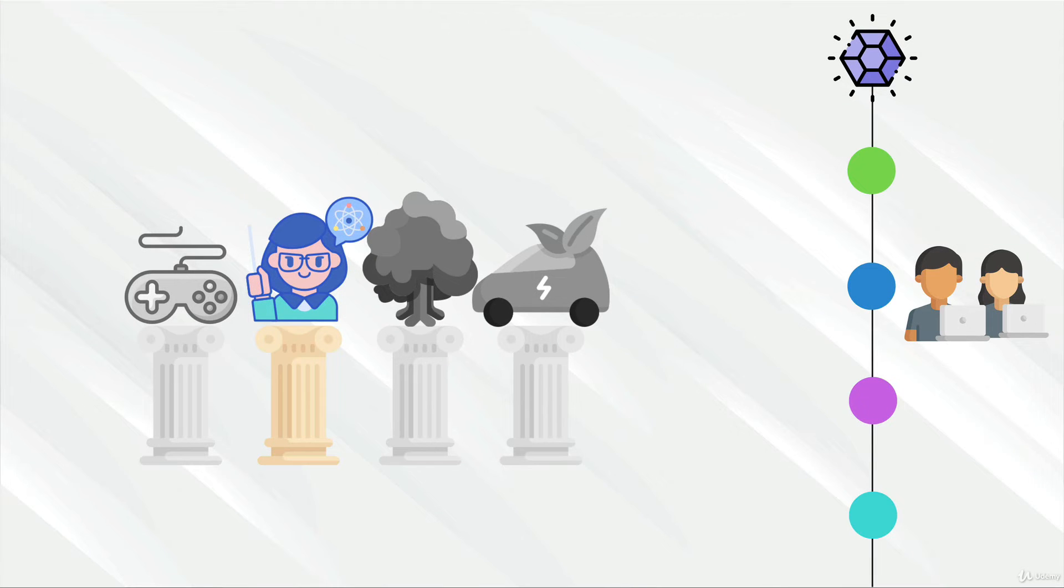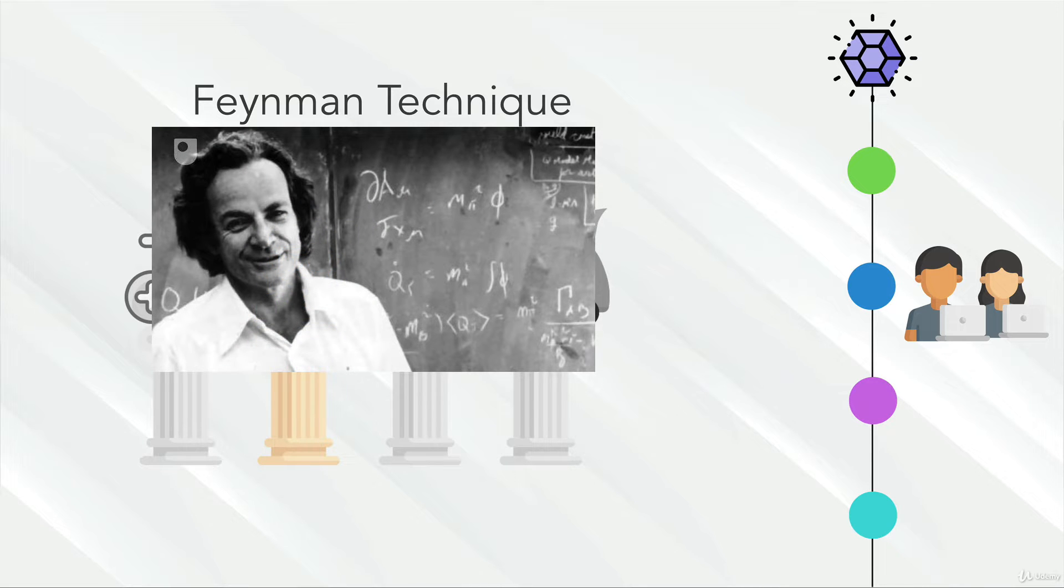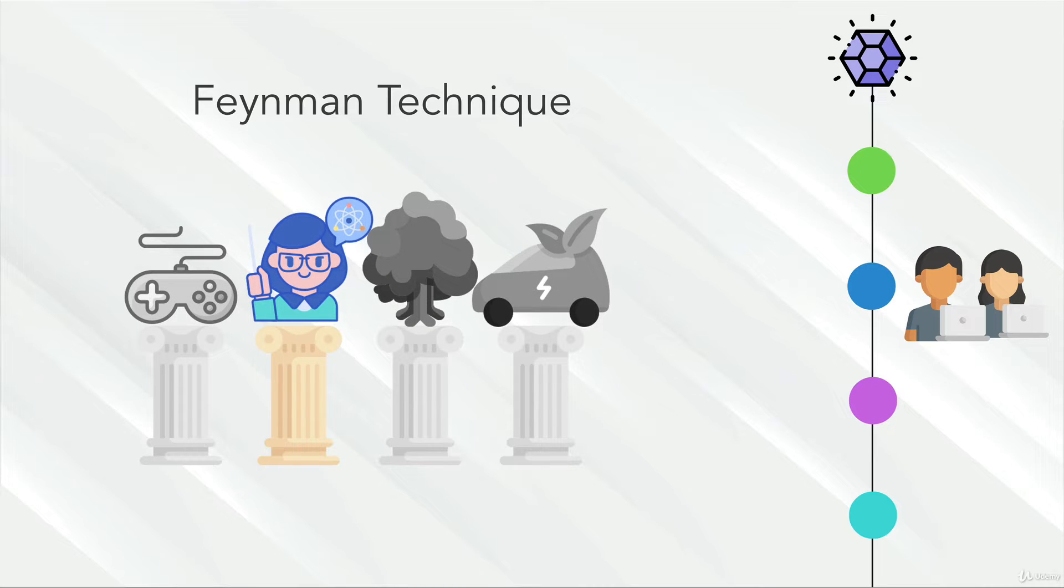Let's talk about the second pillar, the Feynman Technique. The Feynman Technique is named after Richard Feynman, a famous Nobel Prize-winning physicist who was renowned not only for being extremely smart, but also for his ability to explain things to beginners very well.